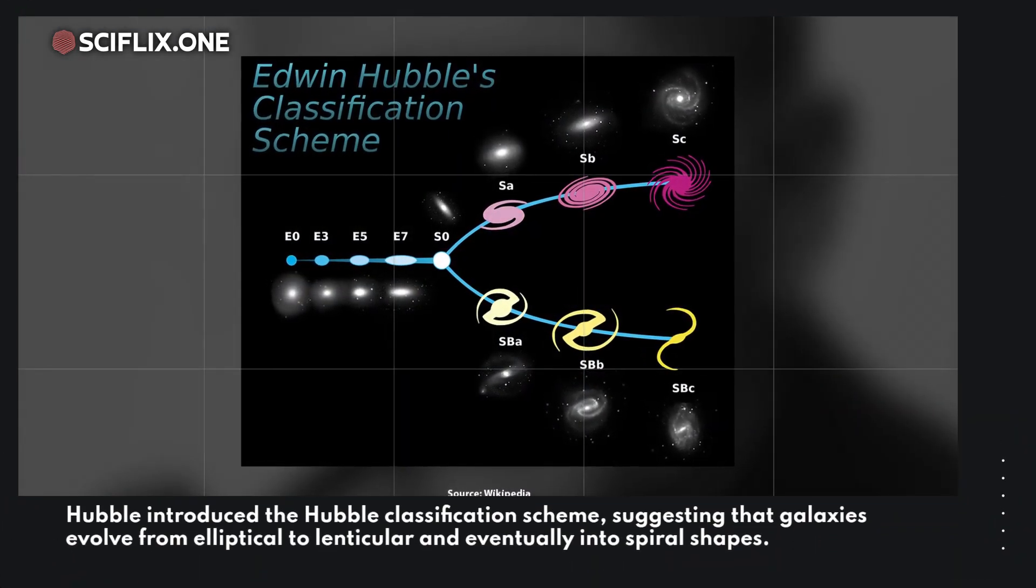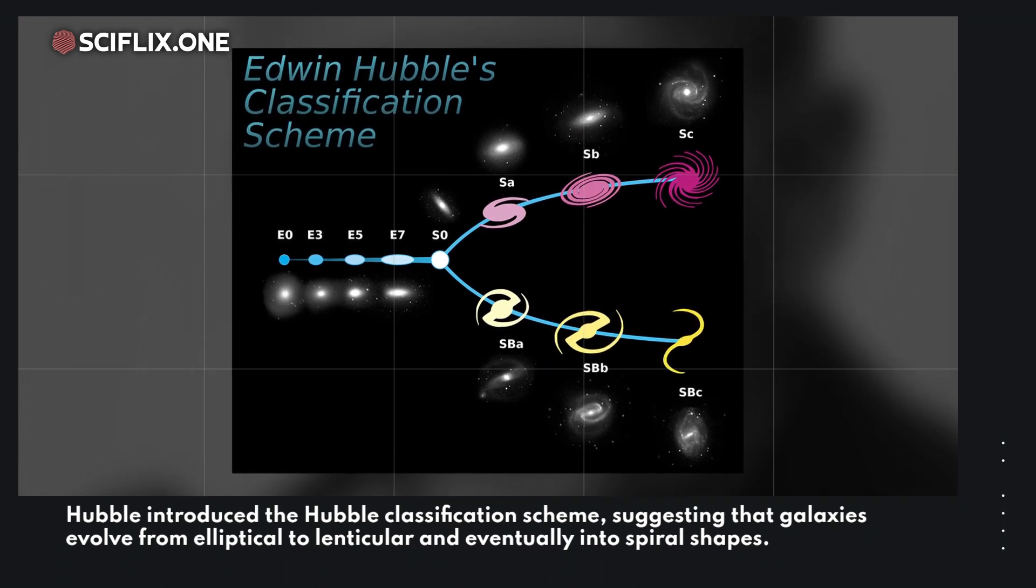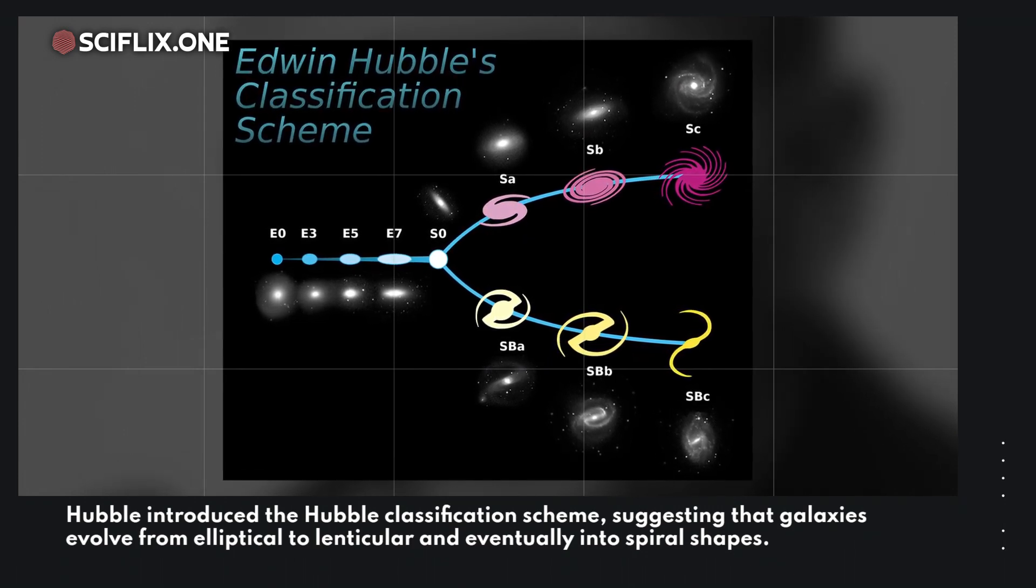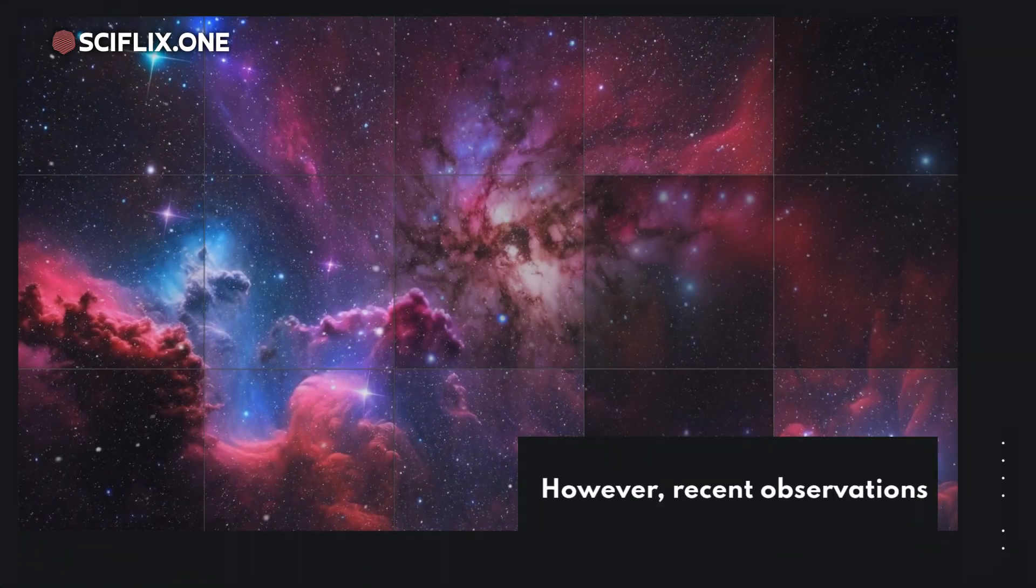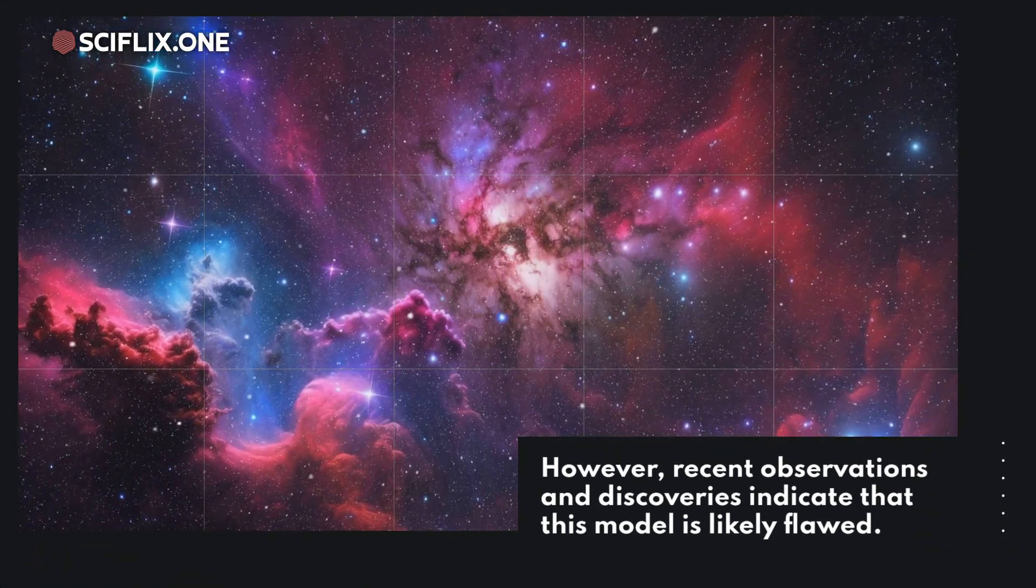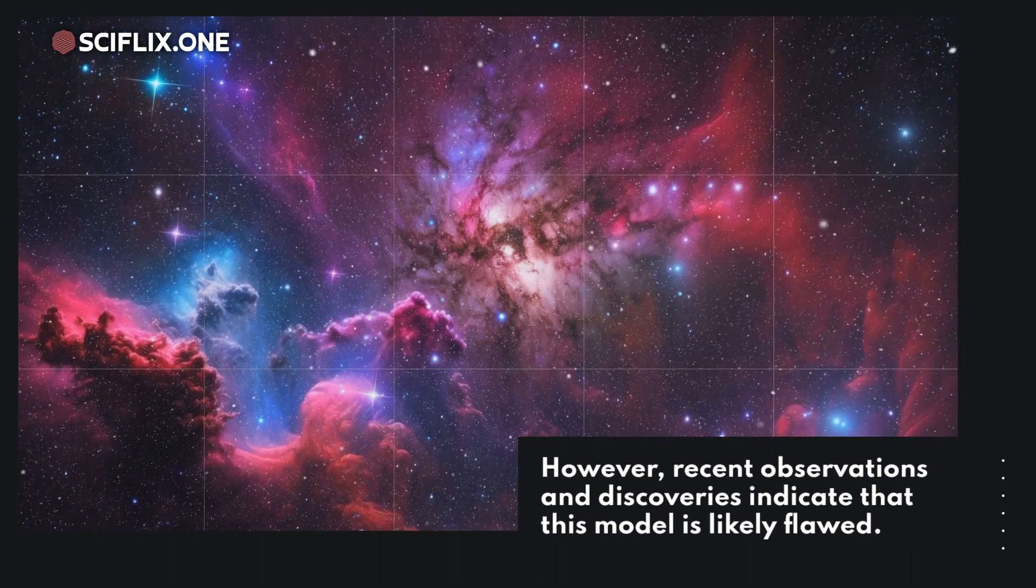Hubble introduced the Hubble classification scheme, suggesting that galaxies evolved from elliptical to lenticular and eventually into spiral shapes. However, recent observations and discoveries indicate that this model is likely flawed.